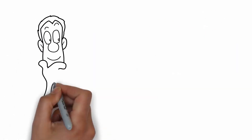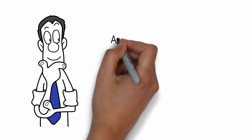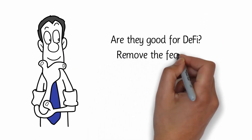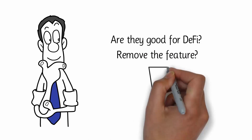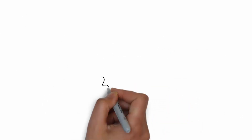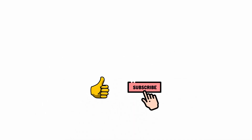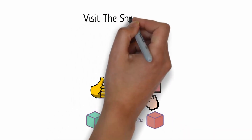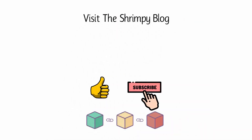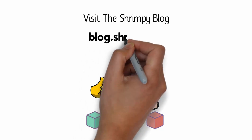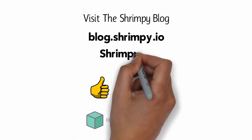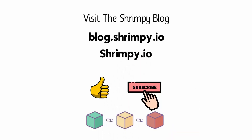What are your thoughts on flash loans? Are they good for DeFi, or should developers remove the feature to create a safer market? Let us know in the comments below. Make sure to like and subscribe, and if you want to learn more about blockchain technology and other crypto concepts, visit the Shrimpy blog at blog.shrimpy.io, or come to our main platform at shrimpy.io to explore social trading and interact with other investors.